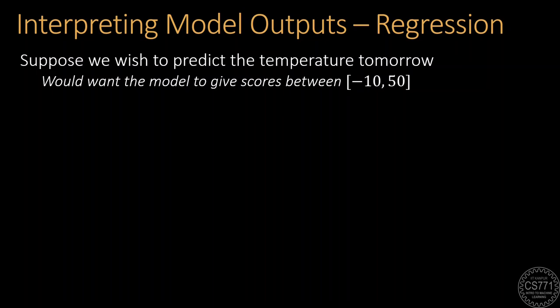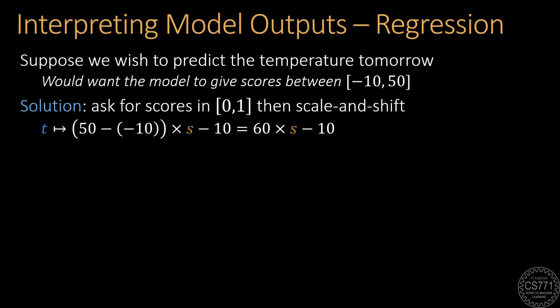So, consider this example where we wish to predict the temperature of a city. And naturally, in this case, the scores would lie between, let's say, negative 10 and 50 because that's the usual range of temperatures. The solution is quite simple here, and we only need to ask the machine learning model to instead give us scores between 0 and 1 and then scale and shift them ourselves. A very simple scaling and shifting function given here would allow us to take the scores that are between 0 and 1 and change them so that they now start lying between minus 10 and 50.